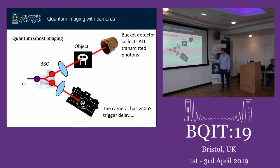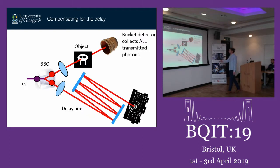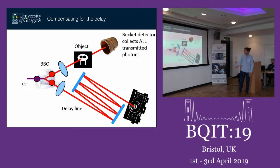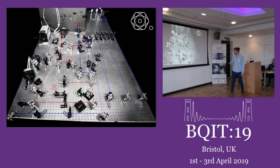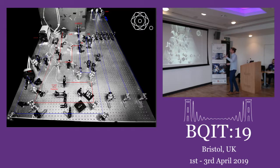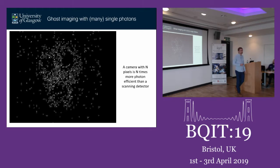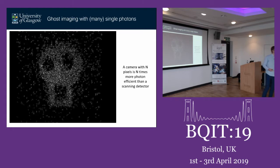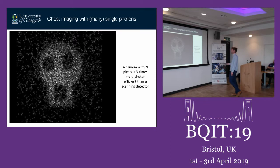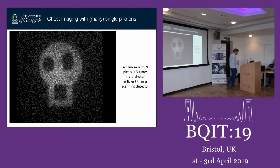The problem with these cameras is a 40-nanosecond trigger delay. Therefore, to implement this setup, you need an image-preserving delay line placed in front of the camera so the second photon waits for the camera to be ready for exposure. Here on the right-hand side of the setup is this 20-meters-long unfolded image-preserving delay line. By summing the triggered images from the camera, you get a reconstruction of the ghost image.